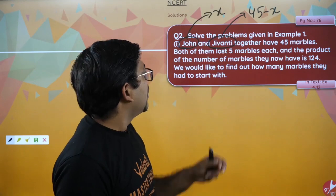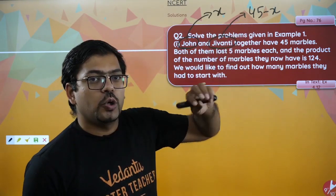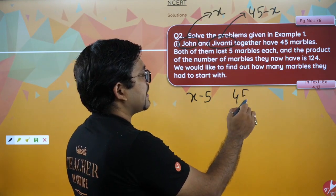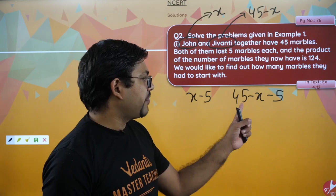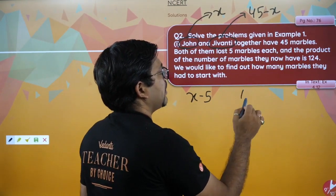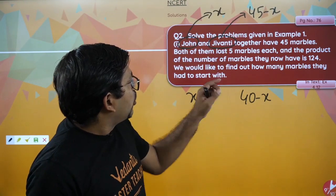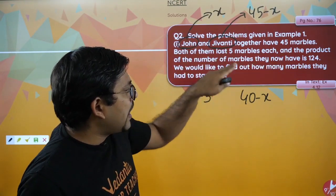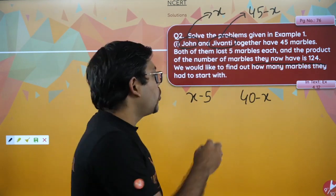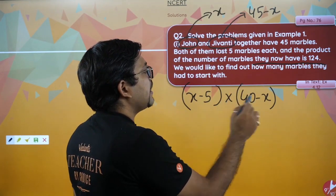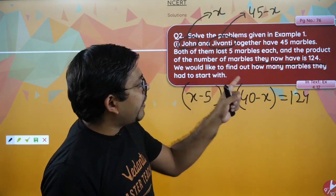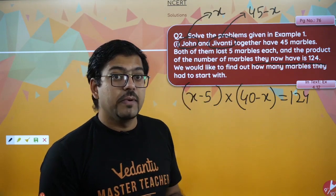Both of them lost five marbles each. So that means John has x minus 5, and Jivanty has 45 minus x minus 5, which is 40 minus x. Both of them lost 5 marbles each, and the product of the number of marbles they now have is 124. We would like to find out how many marbles they had to start with — that means find the value of x.